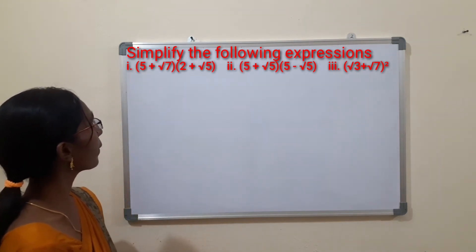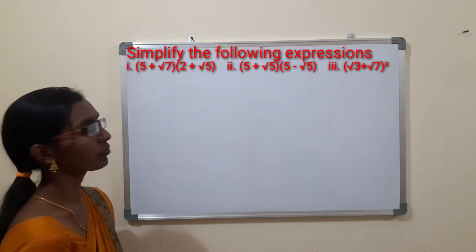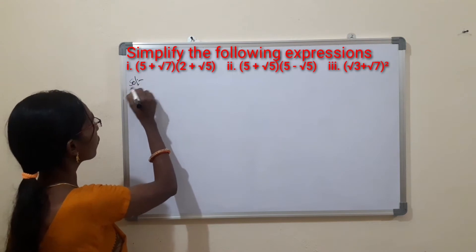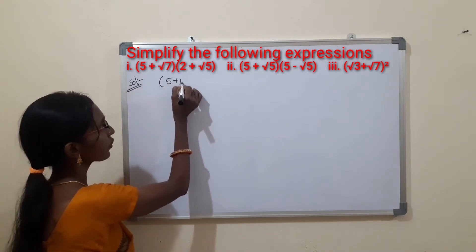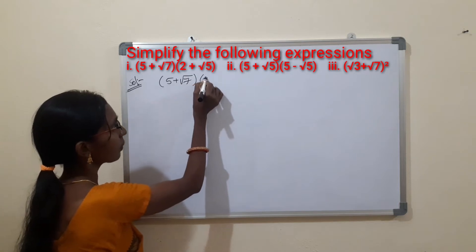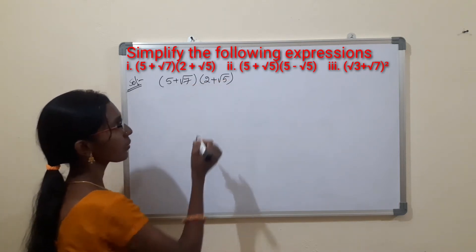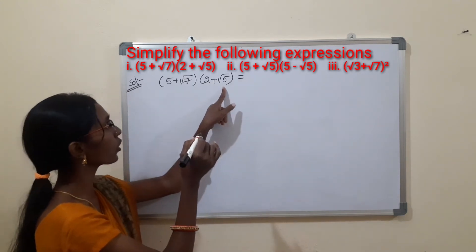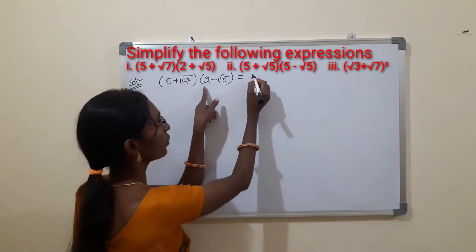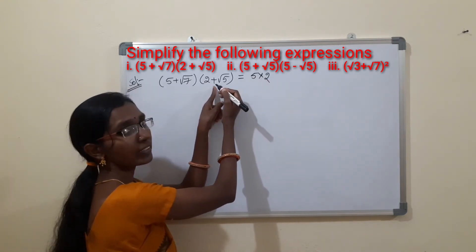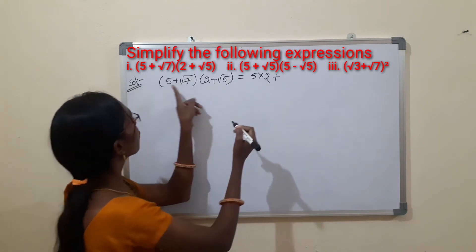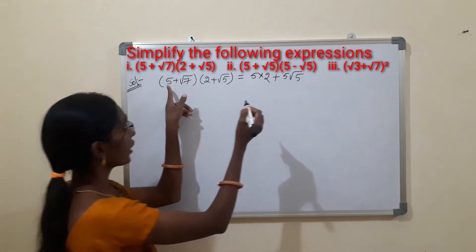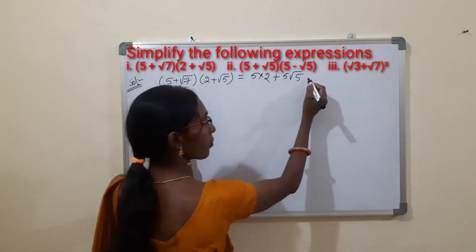The first one is (5 + √7)(2 + √5). We have to simplify the given expression. We multiply the first term 5 by each term in the second bracket: 5 into 2, plus 5 into √5. The symbol between terms is plus.